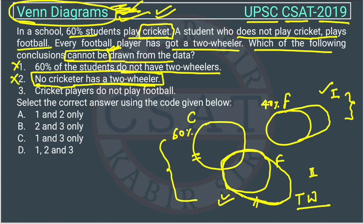The third statement is 'cricket players do not play football.' This information is also not given. It could be the case that the Venn diagram of football does not overlap with cricket at all. So we cannot say this with certainty either — this conclusion is also wrong. If all three conclusions are wrong, then the answer would be option D.